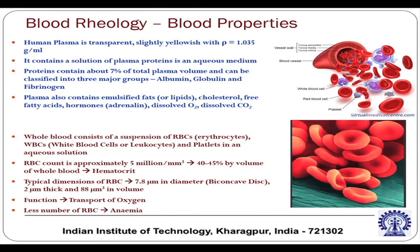We discussed fibrinogen and its importance in the context of constitutive behavior — if you take away fibrinogen, the T-star component will go away. Plasma also contains emulsified fats or lipids, cholesterol, free fatty acids, hormones, dissolved oxygen, and dissolved carbon dioxide. That is the plasma composition.